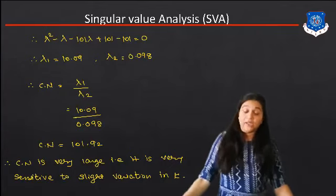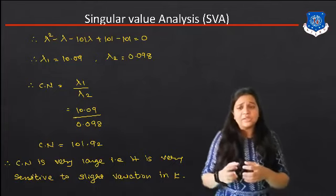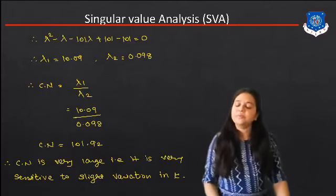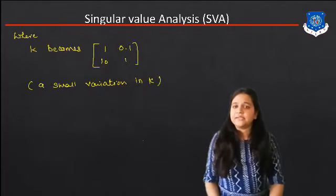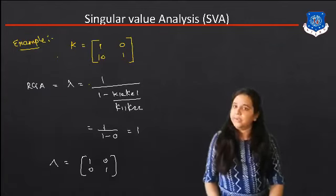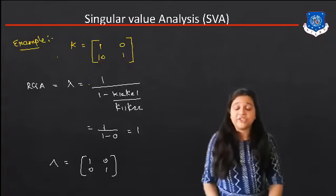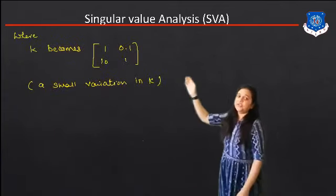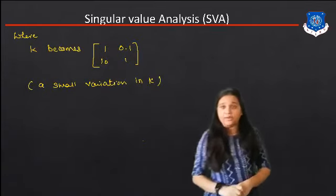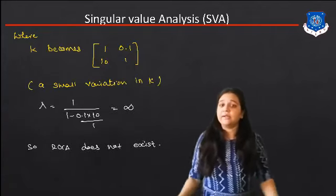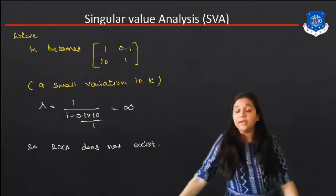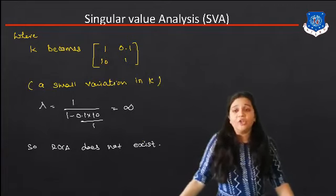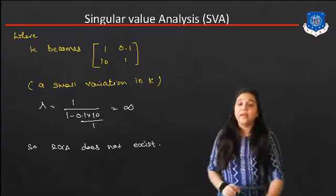This means the system is very sensitive to slight variation in K. So next, we have to slightly change the value of steady-state gain K and then check the value of Cn. The original K matrix is [1, 0; 10, 1]. We simply change 0 to 0.1, giving new K as [1, 0.1; 10, 1]. Calculating the RGA for this new K: Lambda equals 1 upon 1 minus (0.1 times 10) divided by (1 times 1), which equals infinity. So if we get Lambda as infinite, RGA does not exist.